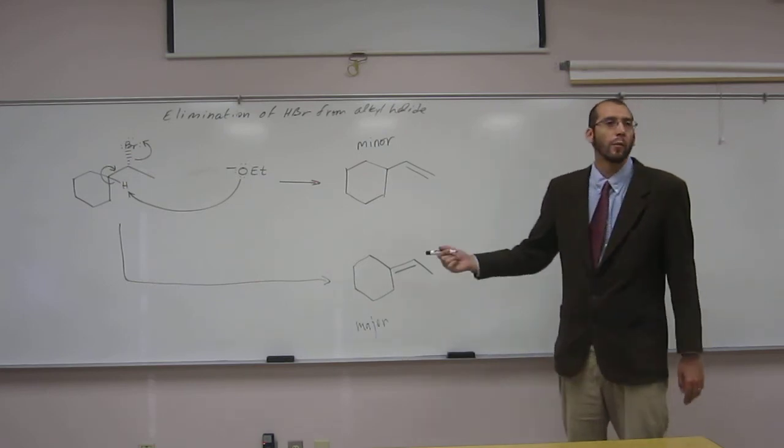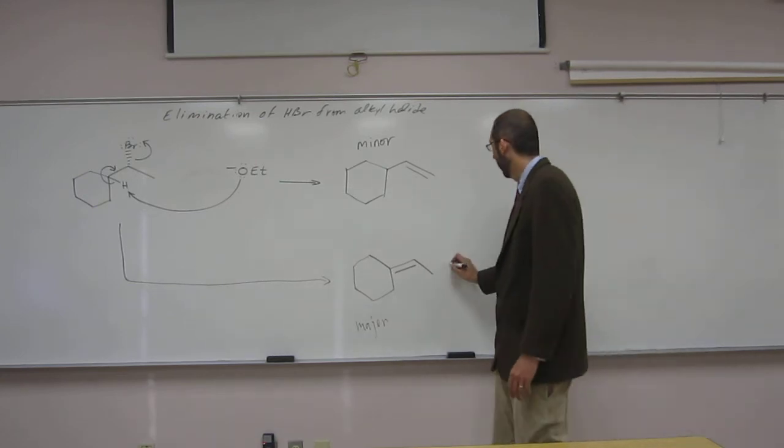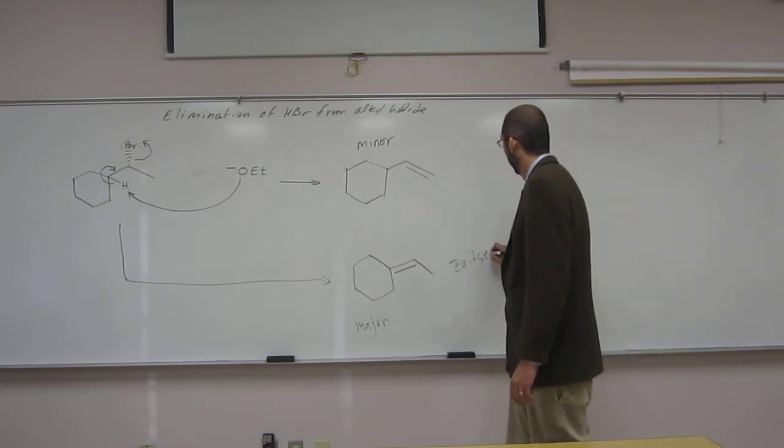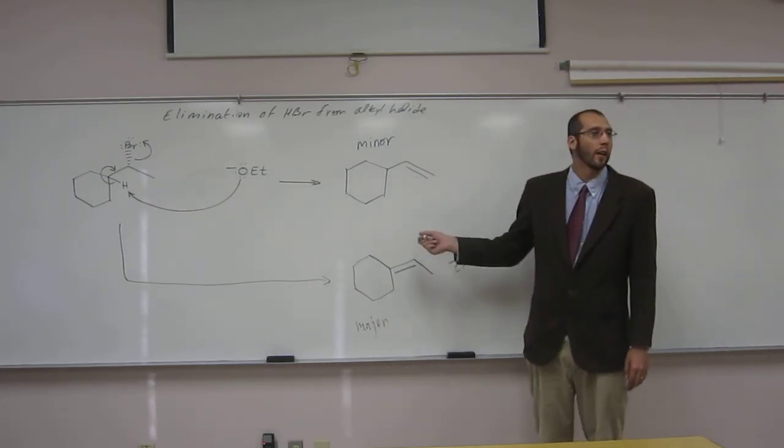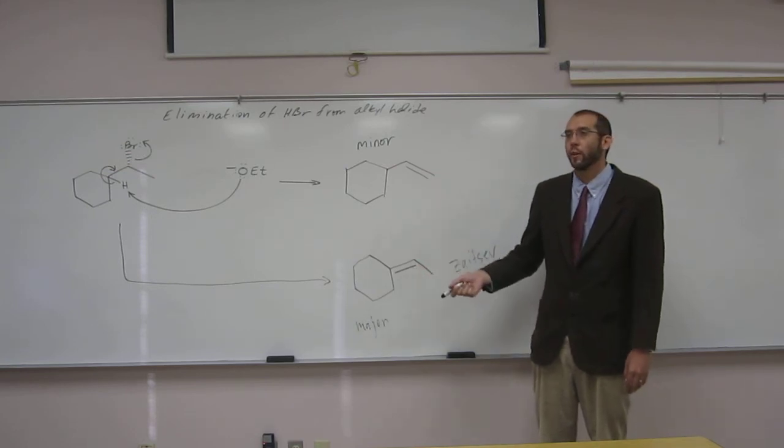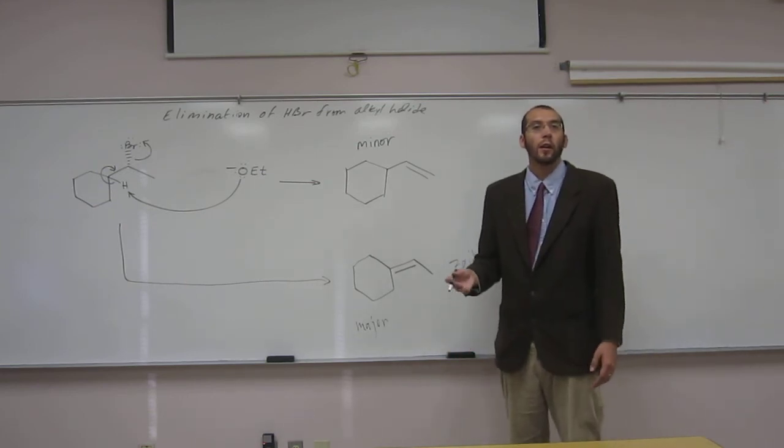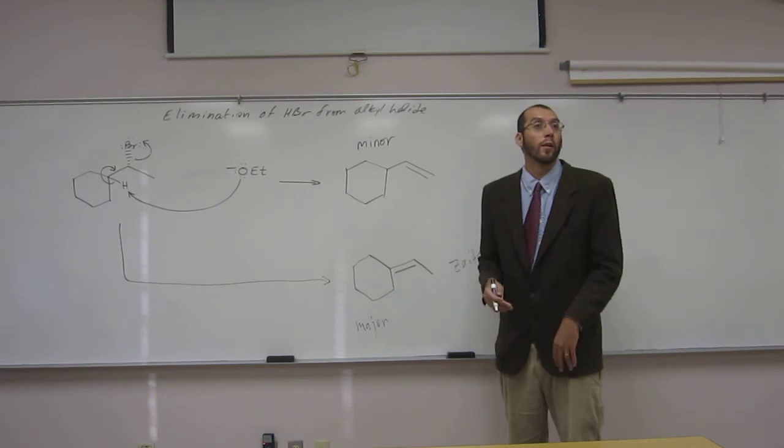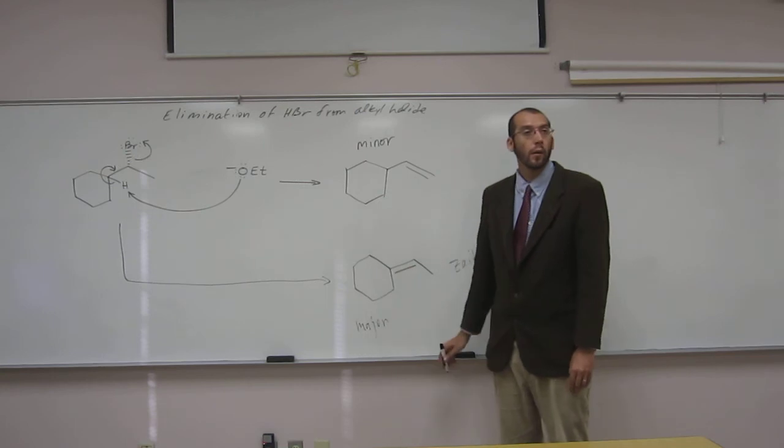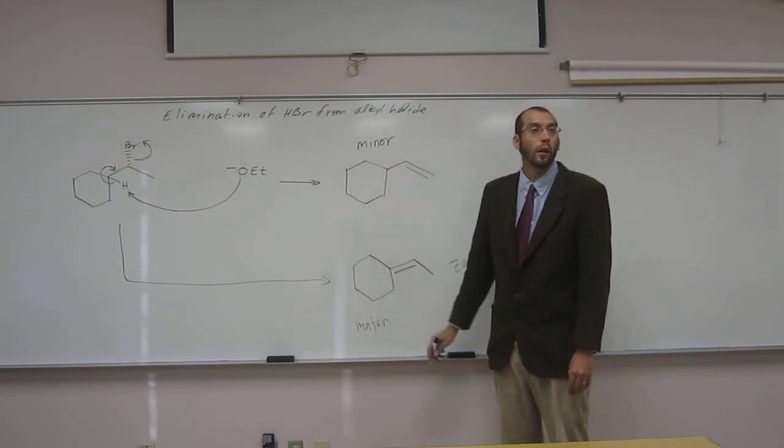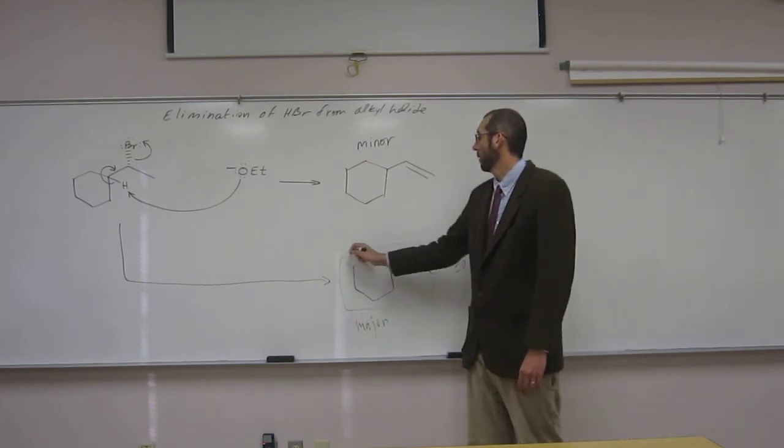And that's the minor product. Can you tell me? Can anybody tell me? Zaitsev rule. Mm-hmm. Yeah. So this is Zaitsev. Right? He says that the more substituted alkene is the more stable one. Therefore, it's going to be produced as the major product. So substitution talks about how many substituents that aren't hydrogen that are around that alkene. Right? So here we've got one, two, three carbons. Here we've got one carbon. So this one's more substituted so that's the major product.